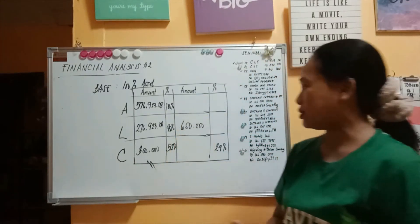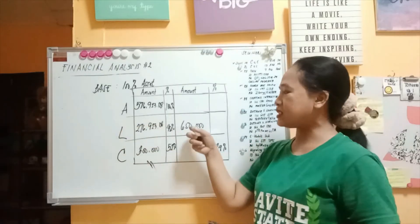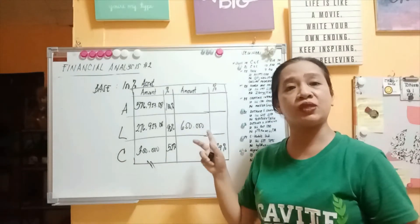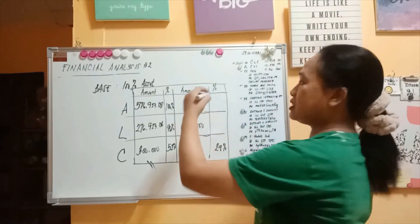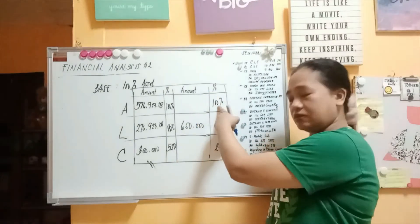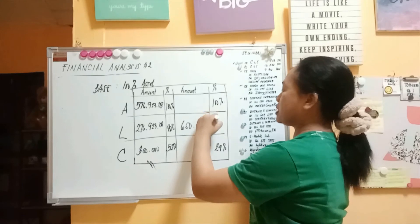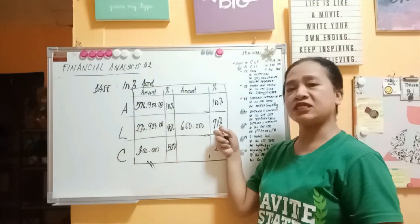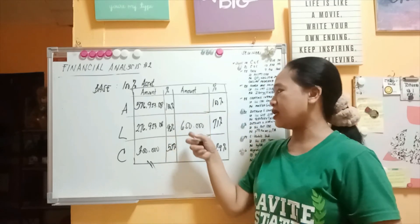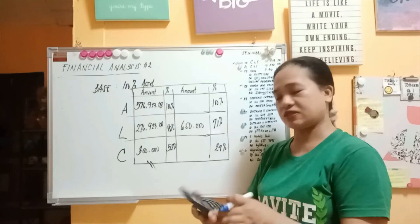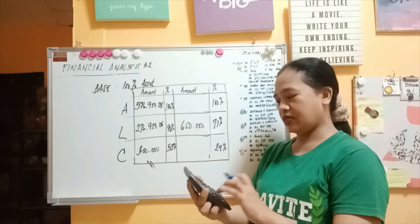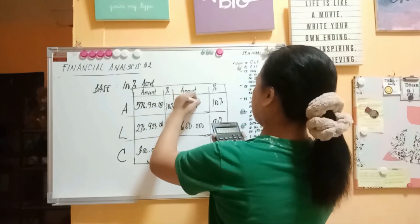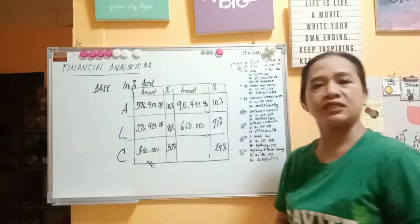Now the second example. The given information is: liabilities = 650,000 and capital = 29%. Again, the base is asset at 100%. So 100% minus 29% gives liabilities a percentage of 71%. Divide the liabilities amount by its percentage: 650,000 divided by 71%, giving a total asset of 915,492.96.